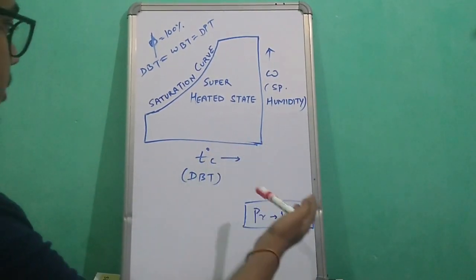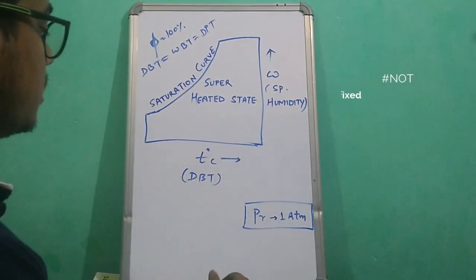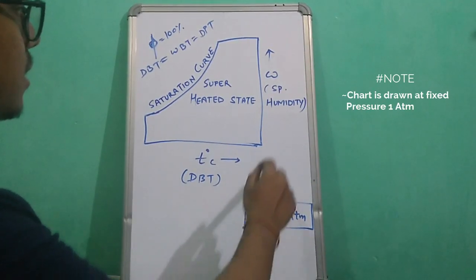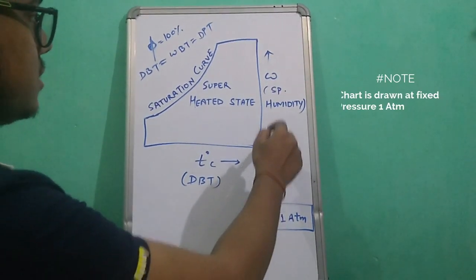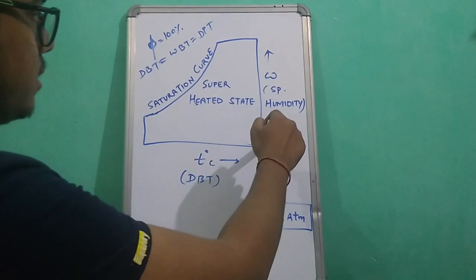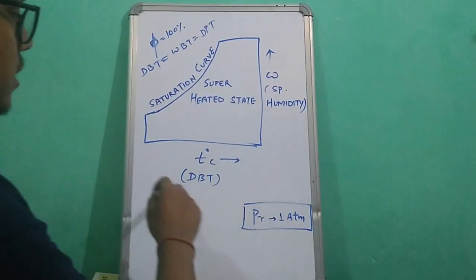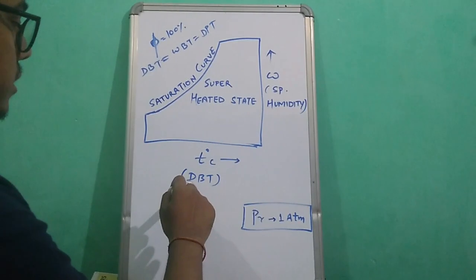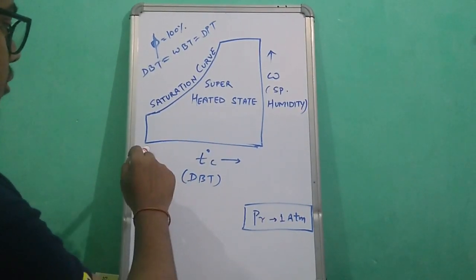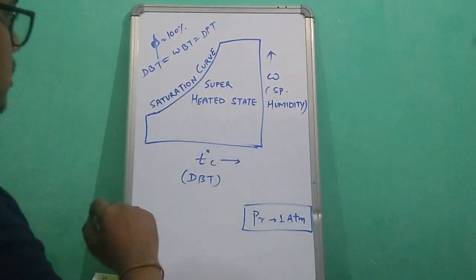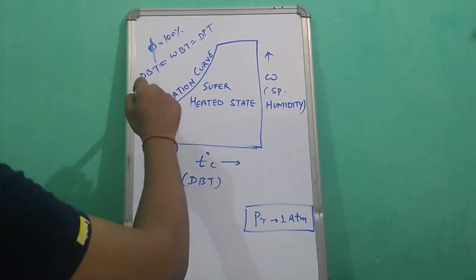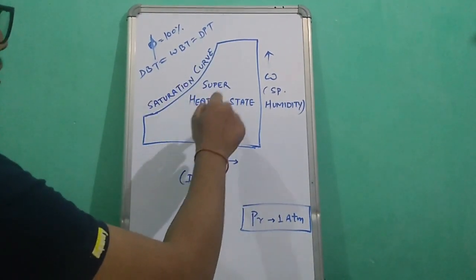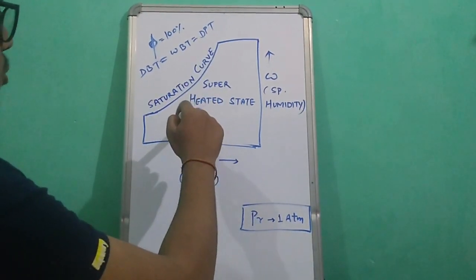This is the basic structure of the psychrometric chart. It is plotted at a constant pressure of 101.3 kPa. The vertical axis denotes specific humidity, and the horizontal axis denotes dry bulb temperature increasing from left to right. The curve denotes the saturation point, and the region beyond it denotes the superheated state.